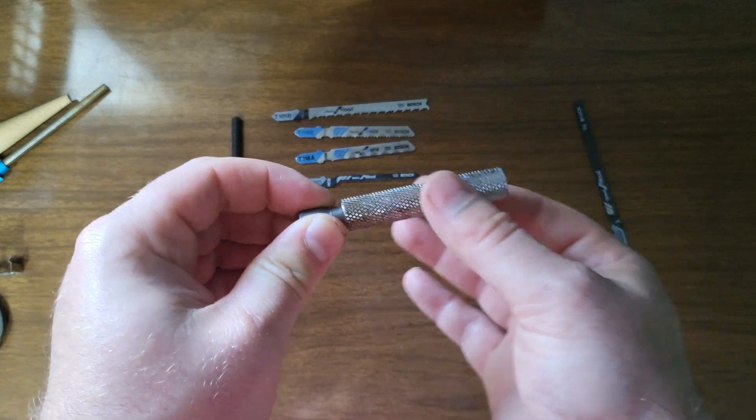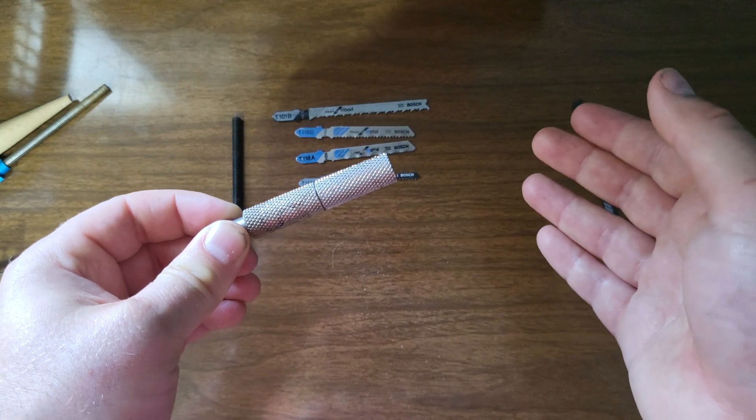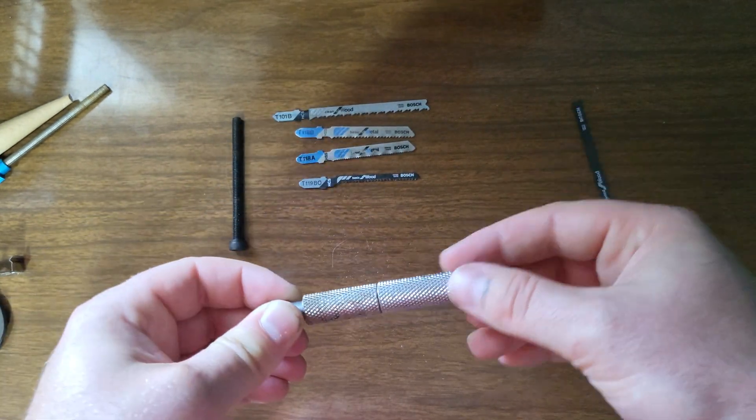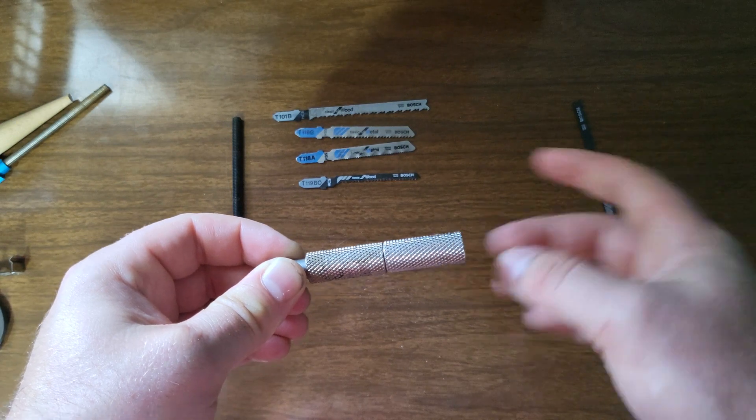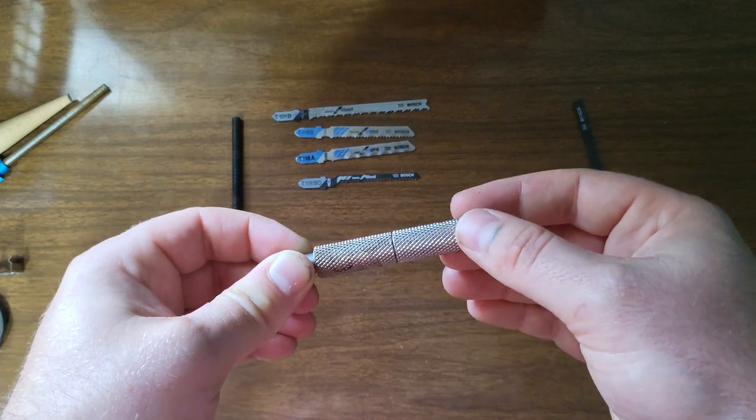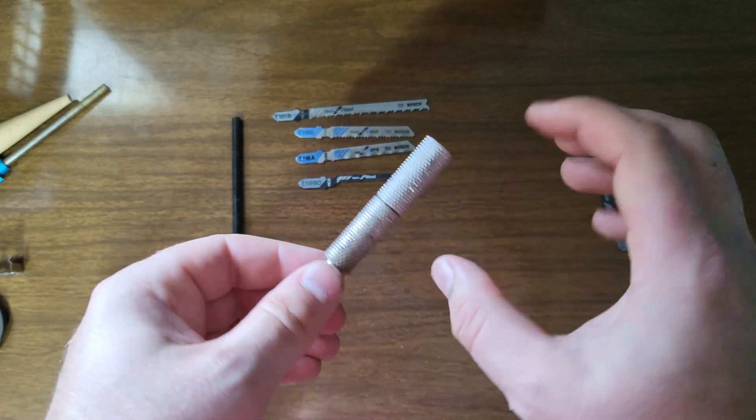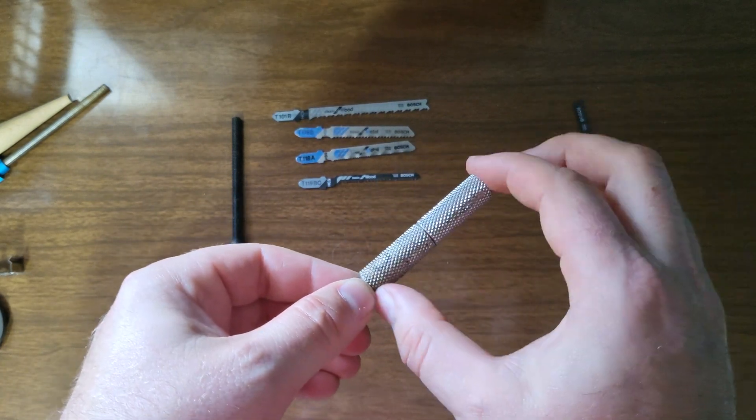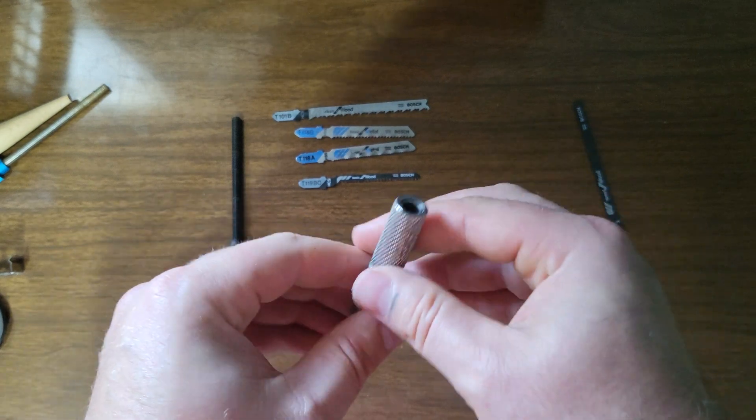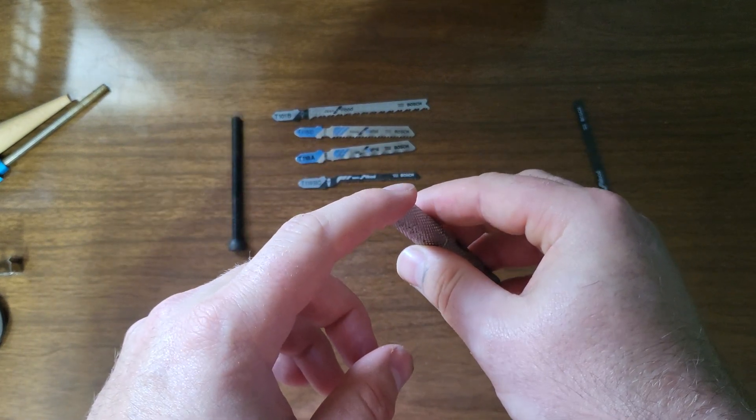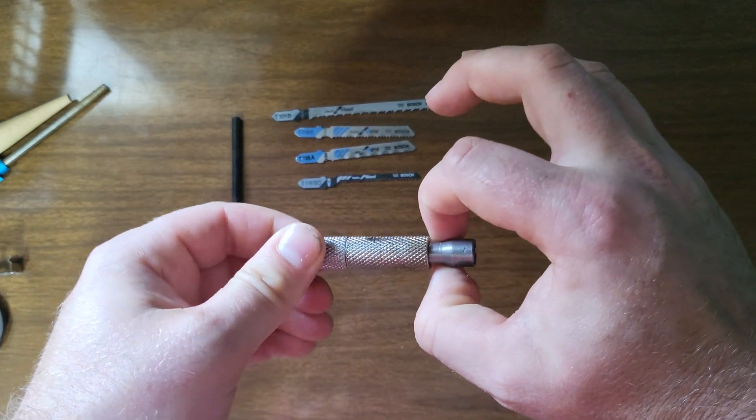I bought two knurled sleeves off of AliExpress, you can find them by searching knurled sleeves, and this one has a 12 millimeter outside diameter and a 6 millimeter inside diameter originally. And they're 30 millimeters long so 60 millimeters long in total. What I did was I drilled each one to an inside diameter of 8 millimeters and that was the outside diameter of this.